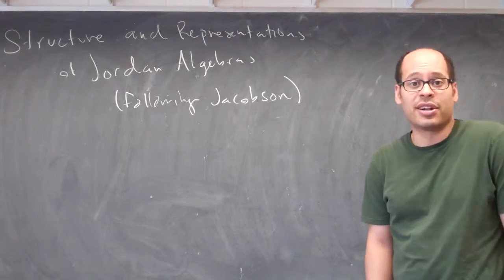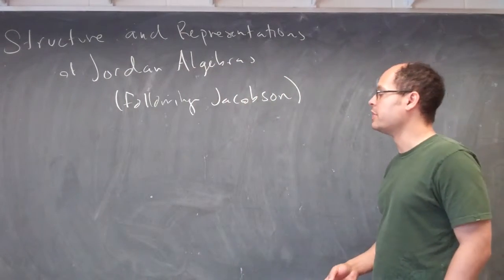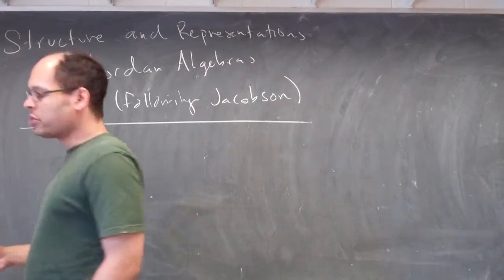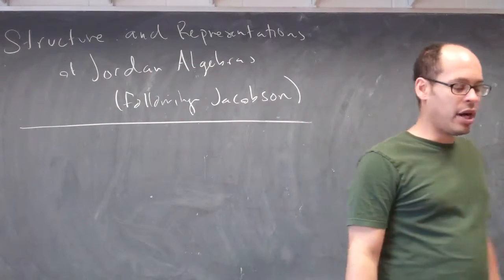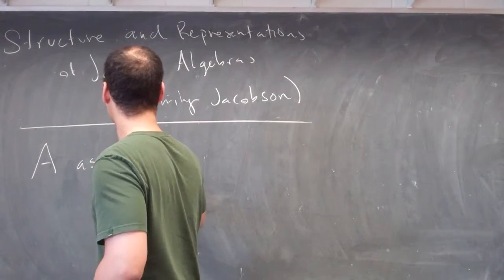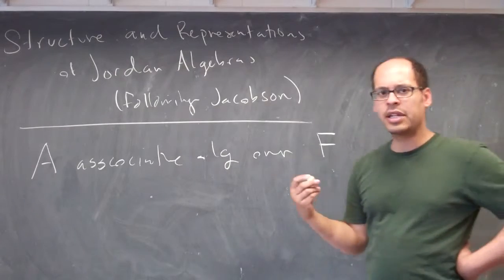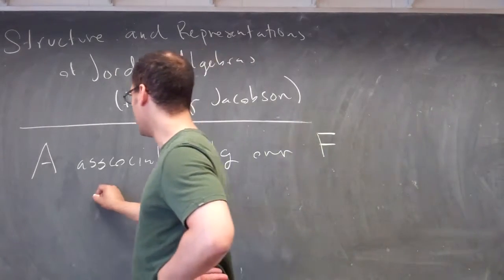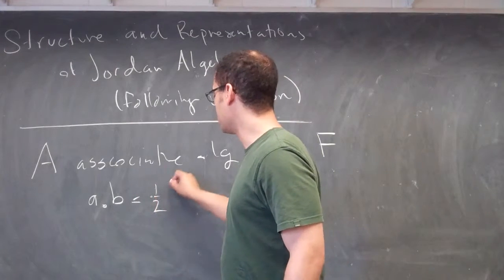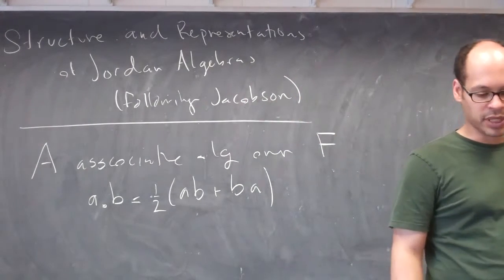These Jordan algebras are just very interesting objects in their own right. So let me begin by setting the stage briefly. The notion of a Jordan algebra is modeled on the following idea. You start with some associative algebra over some field F, and instead of considering the normal operation of multiplication on it, you consider this so-called Jordan product, which we write as A lower dot B, and that's going to be one-half AB plus BA — the symmetrized multiplication operation.